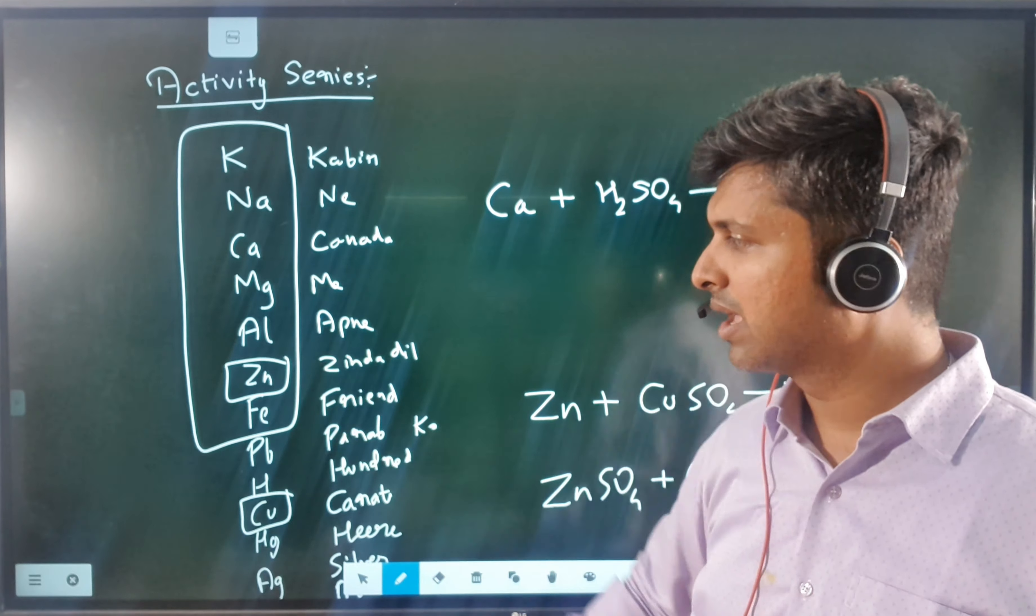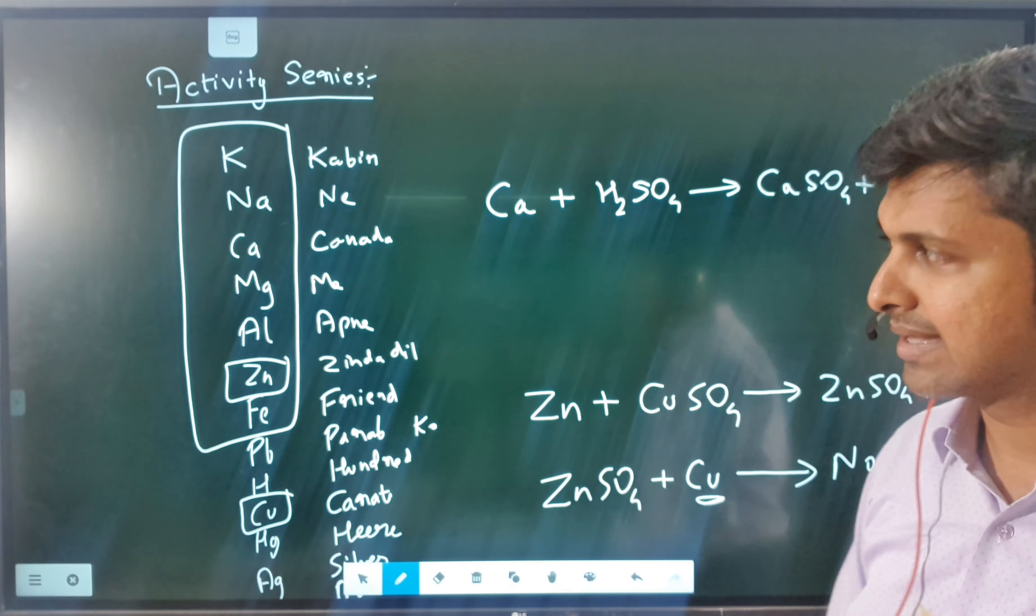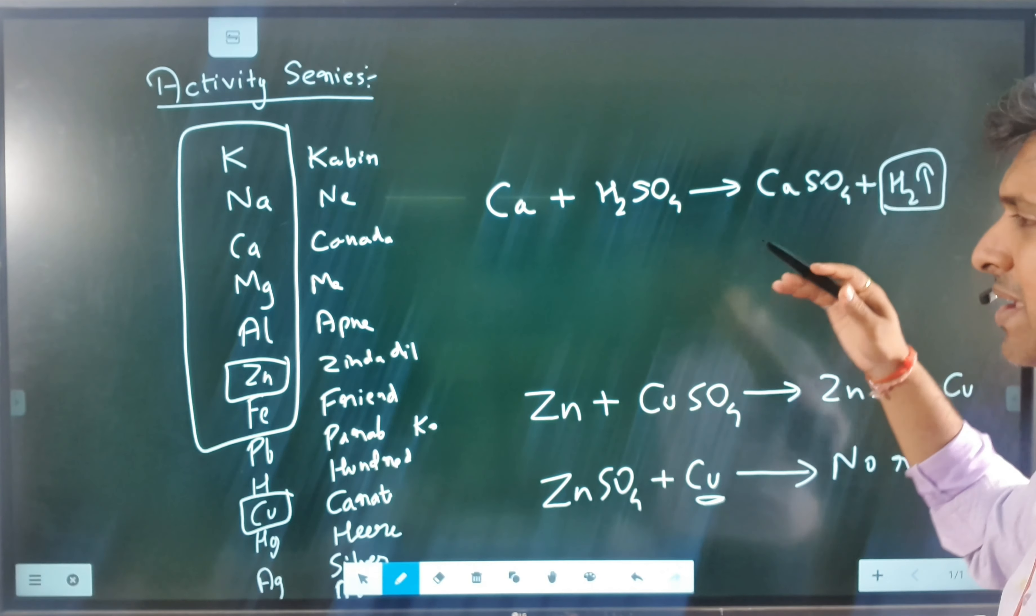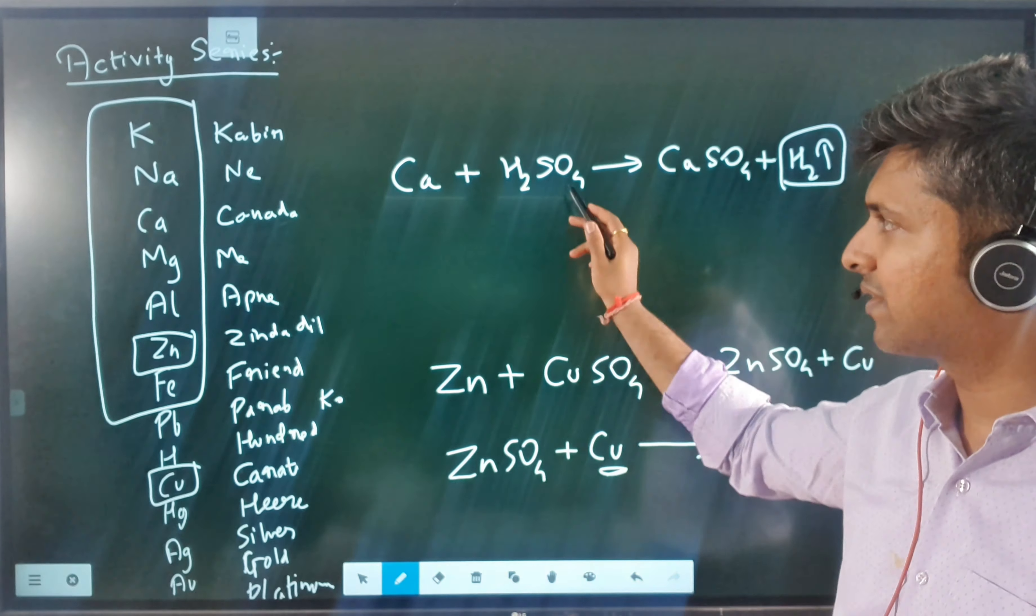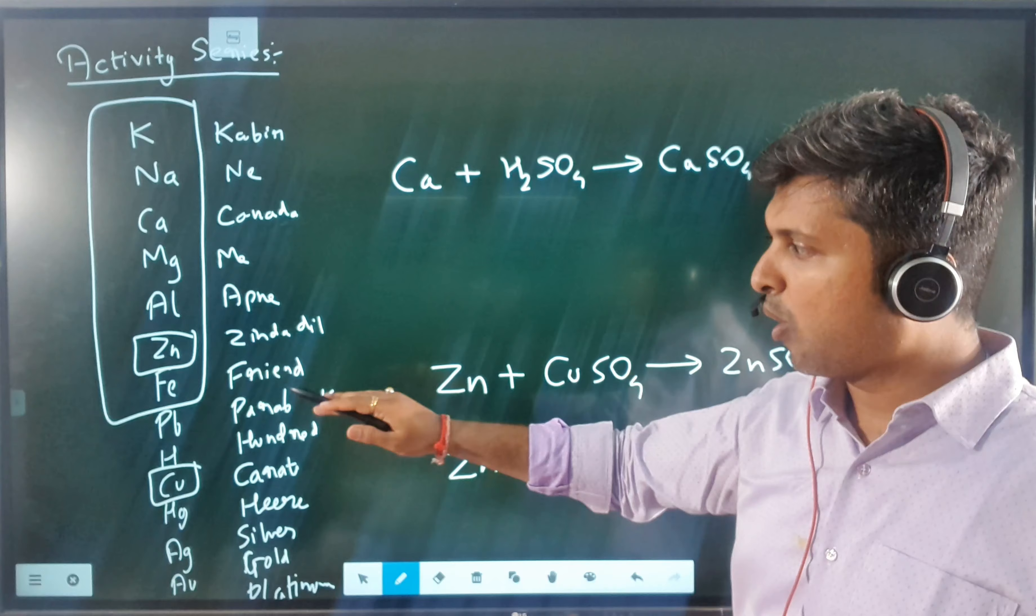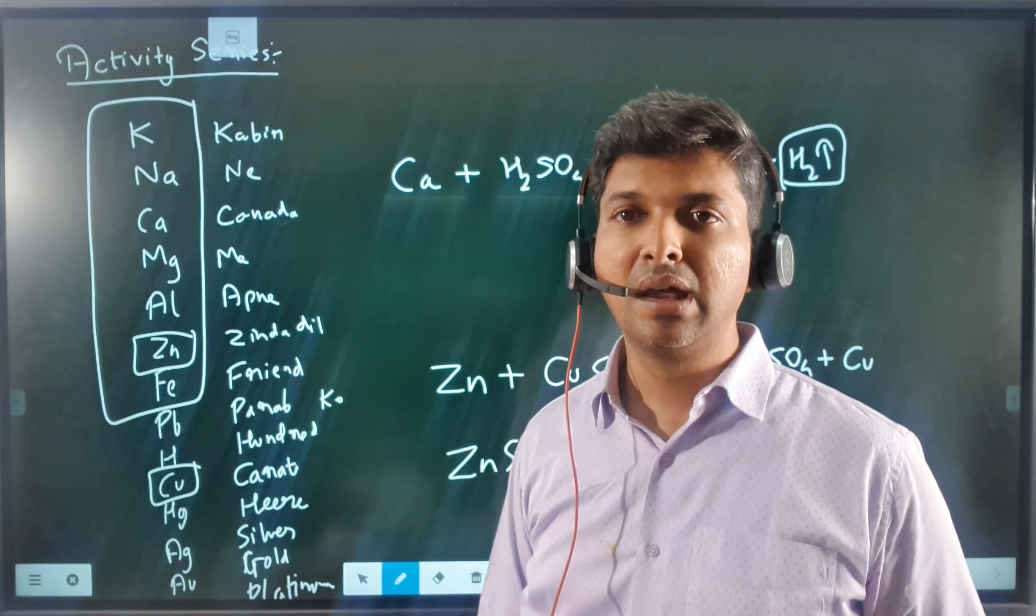Same goes with sodium, potassium, magnesium, aluminum, zinc—all of them can displace hydrogen from acids. You can see hydrogen gas is being released, being displaced, meaning it is moving out of the place. The same thing can be done by all metals which are placed above hydrogen except for lead.